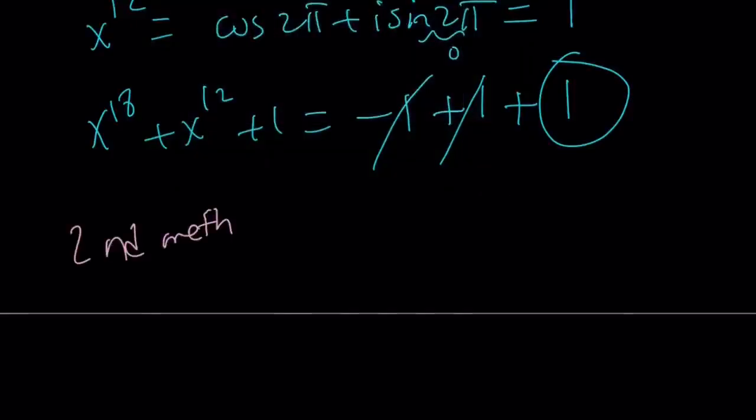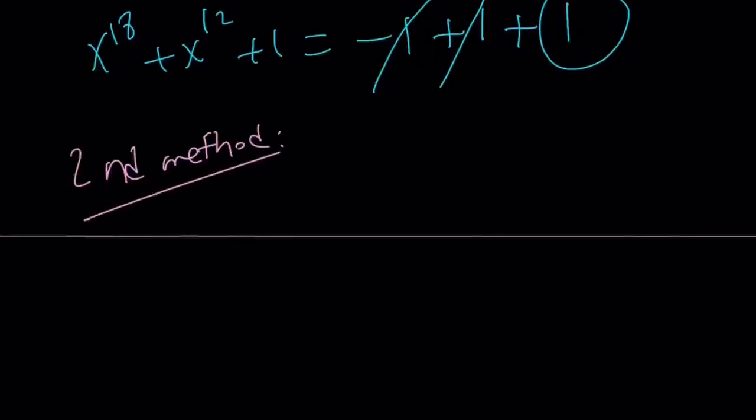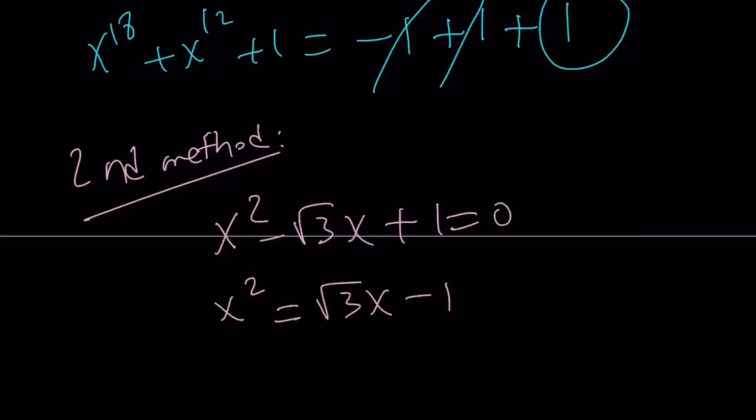And you expect to get something nicer with the second method. So here's the thing. I'm trying to evaluate this expression. Let me go ahead and use the quadratic. We already got that. Now from here, I'm going to isolate x squared. x squared equals square root of 3x minus 1, and I'm going to keep using it.